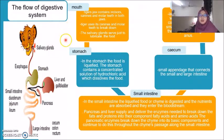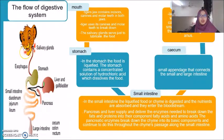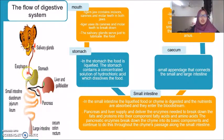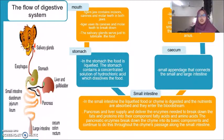This is the flow of the digestive system in the tiger, starting from the mouth. The tiger jaw contains incisors, canines, and molars in both jaws to break down food. The salivary glands serve to lubricate the food, and then it goes down through the esophagus to the stomach. In the stomach, the food is liquefied. The stomach contains concentrated hydrochloric acid which dissolves the food before it passes to the small intestine.